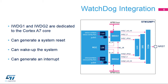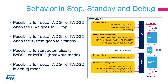The interrupt signals are connected to the Global Interrupt Controller, or GIC, of the Cortex-A7 core. The reset signals generated by the watchdogs are connected to the RCC block and can perform a system reset. The application can control the behavior of both watchdogs in stop, standby, or in debug mode.